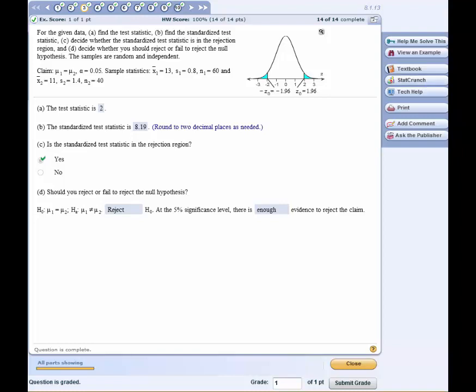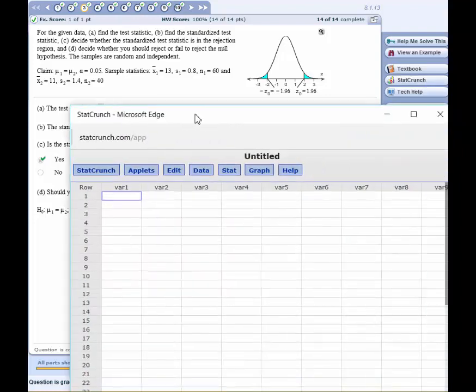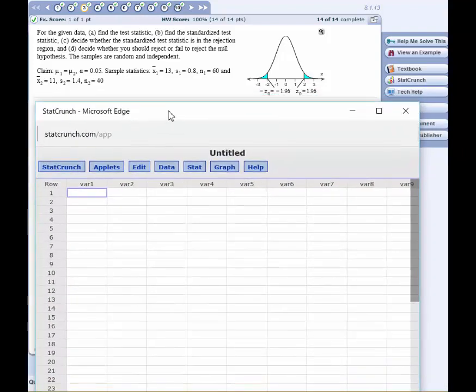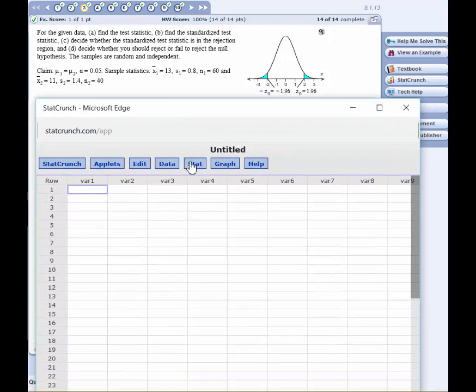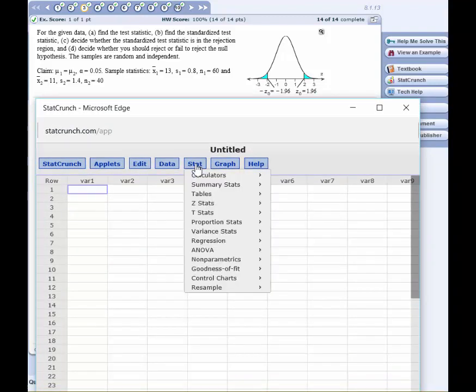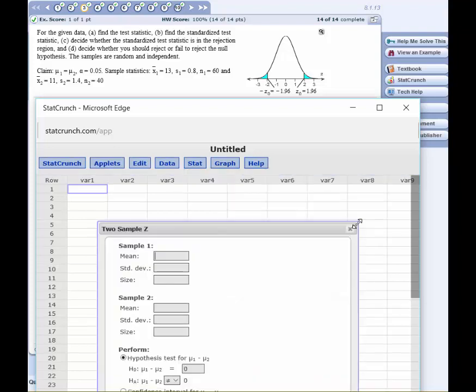So I just click on that, launch StatCrunch, and I want to bring it over here so we can see it and I can enter the data. Click on Stats, Z Stats because it's a normal problem, two sample, and we have summary data.